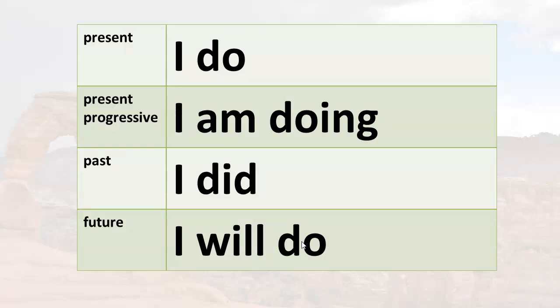Just a quick review. In the present: I do. I do. In the progressive: I am doing. I am doing. In the past: I did. I did. And in the future: I will do. I will do.